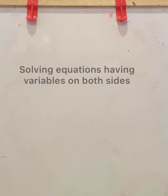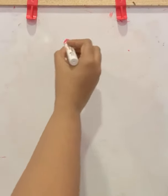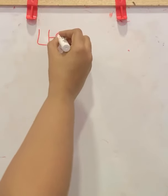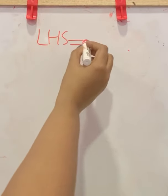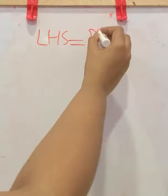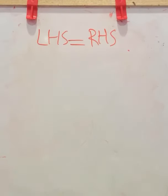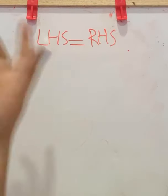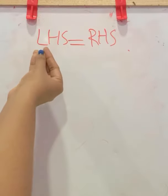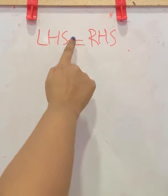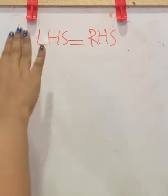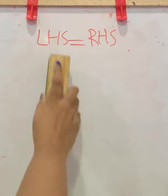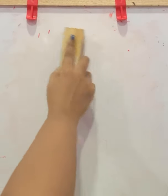Namaste. Today we will check how to solve equations having the variable on both sides. Both sides means both sides of the equal sign. Here it is LHS, that is left-hand side of the equal, and here it is RHS, right-hand side of the equal. Now we are going to solve where variables are on both sides of the equal sign — that is on LHS and RHS. Let us do some examples.